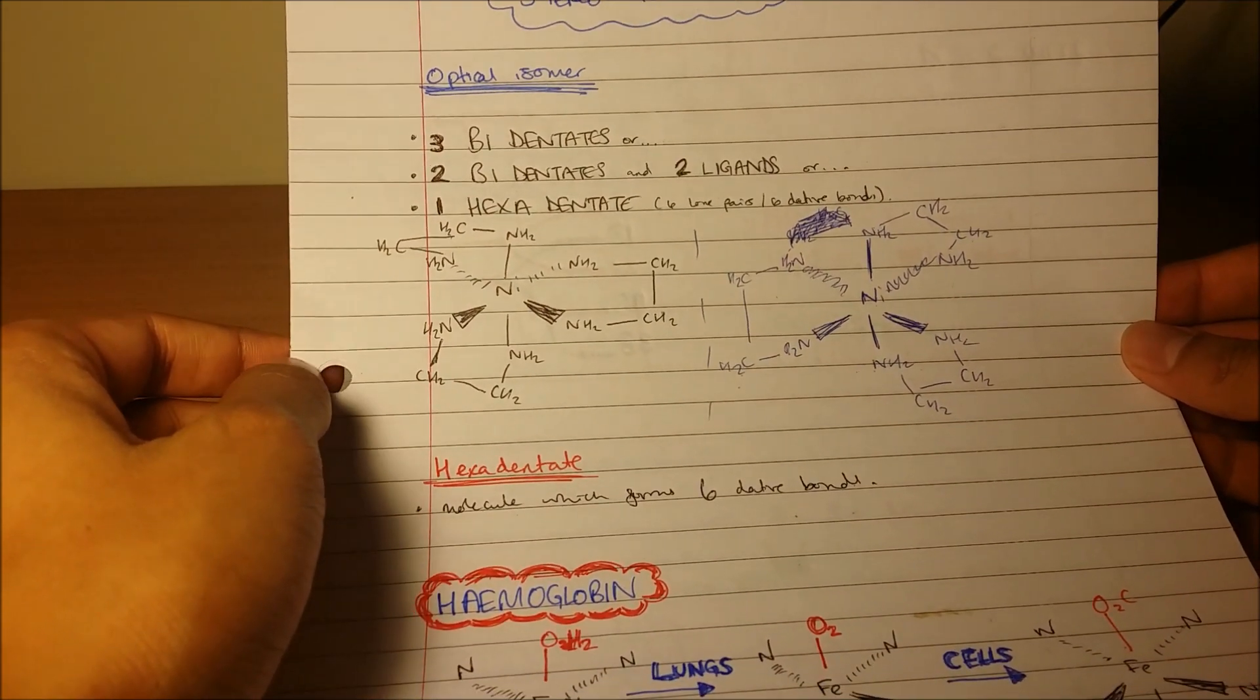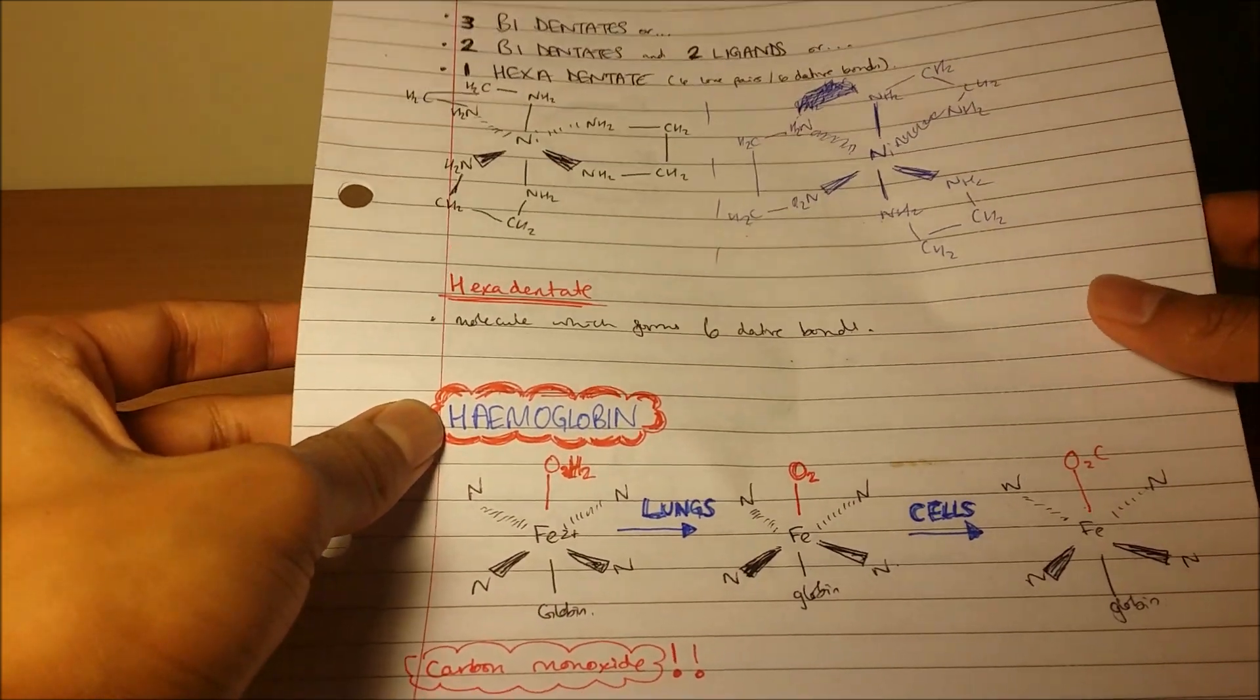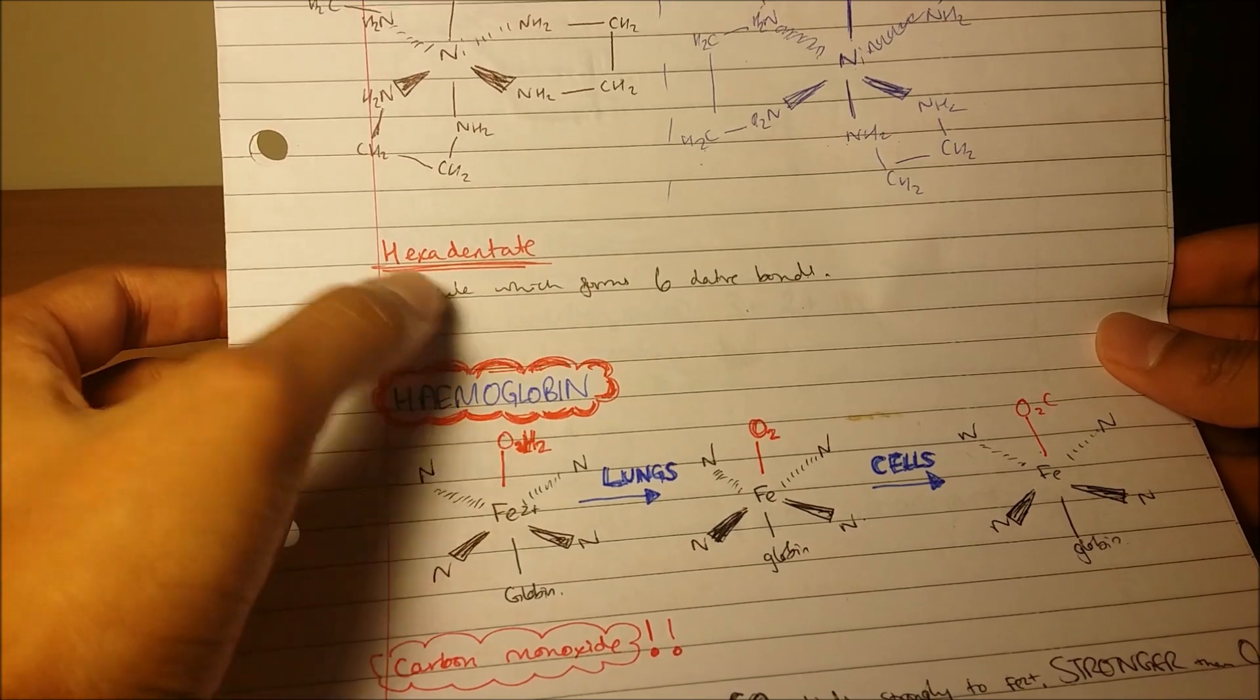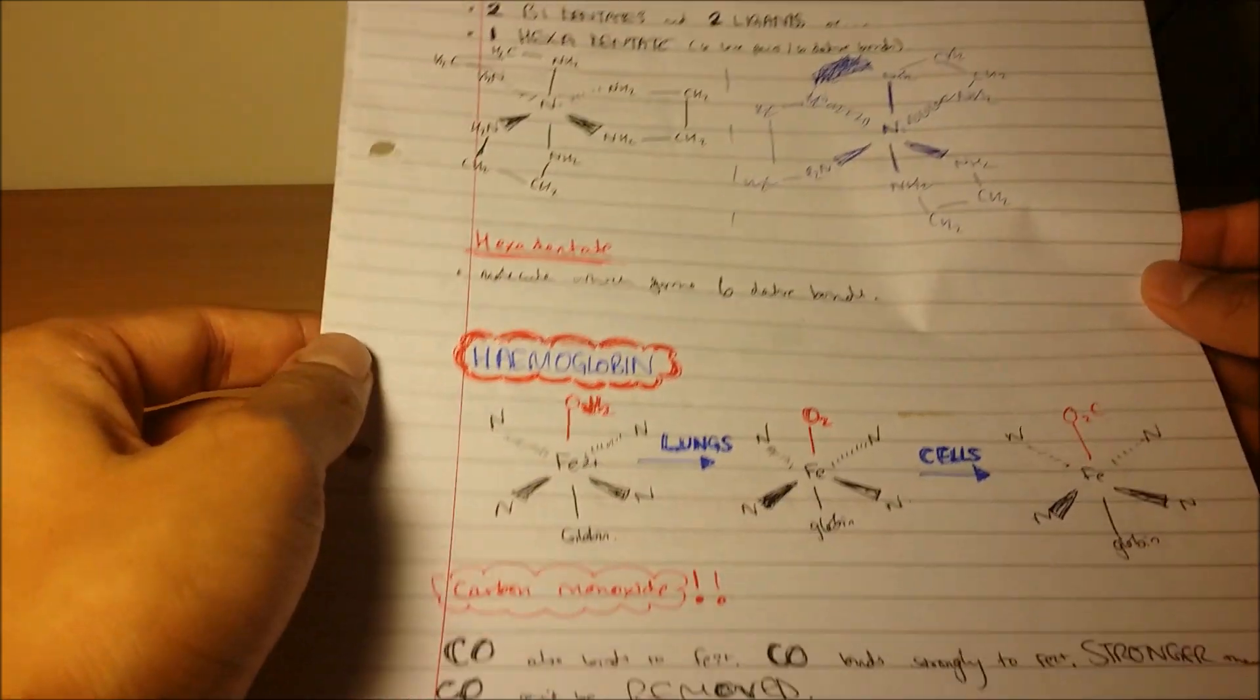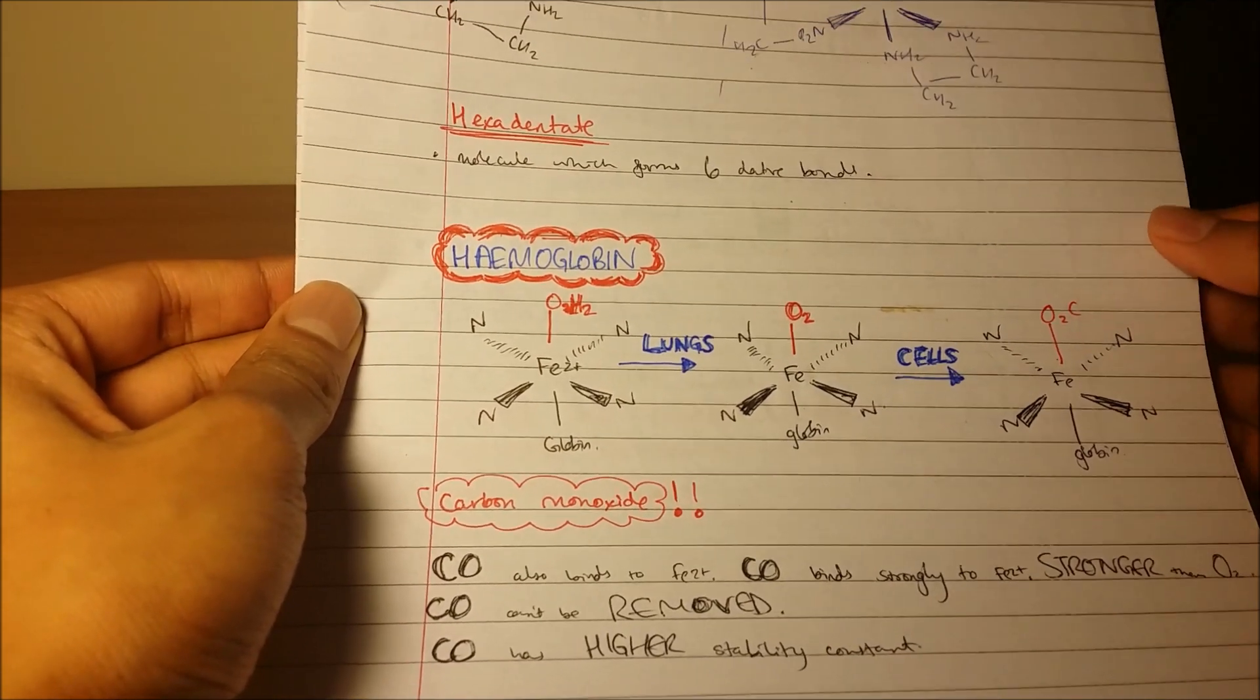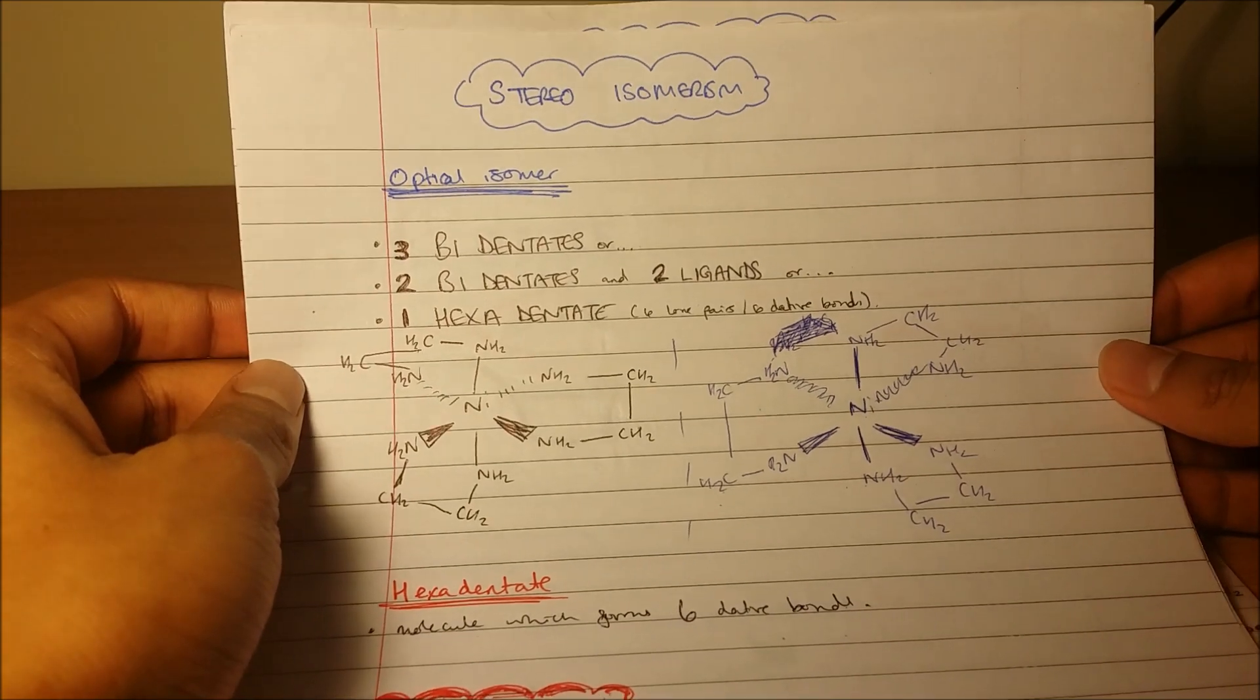For example, hemoglobin - this is quite important, so I wrote it in blue and then went over it in a red outline. Carbon monoxide, quite important topic, so I did it in red and then a little cloud around it with exclamation marks. Make sure you use different colors for your notes.